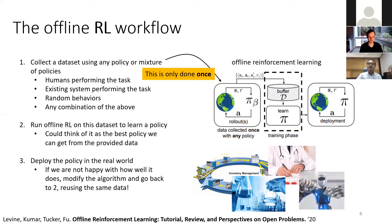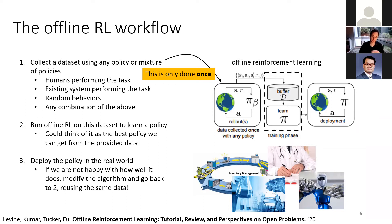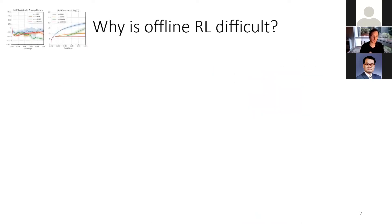A question from the audience: in DQN there's a replay buffer — is there any difference between offline RL and the replay buffer methodology in DQN? The starting point for the methods covered here is basically Q-learning. When this research started a few years back, we took Q-learning methods and asked if they could do this — and it turns out there's a problem, which I'll describe shortly.